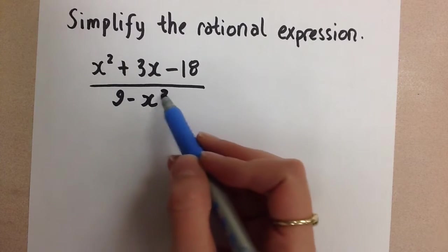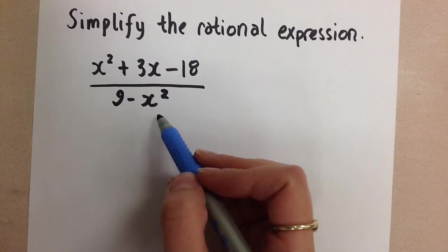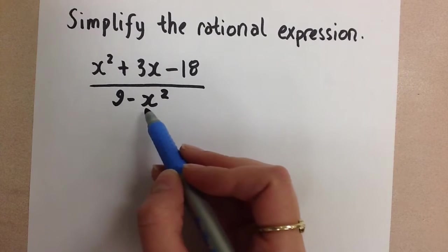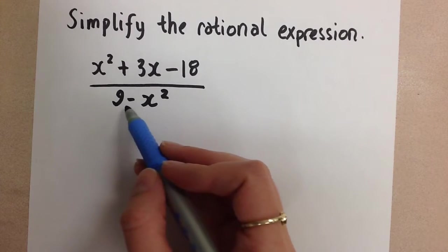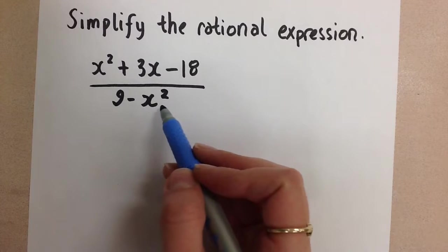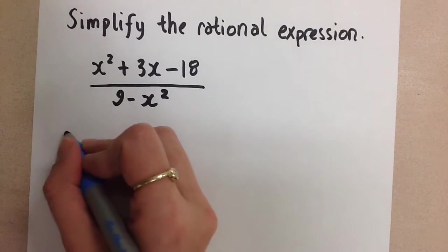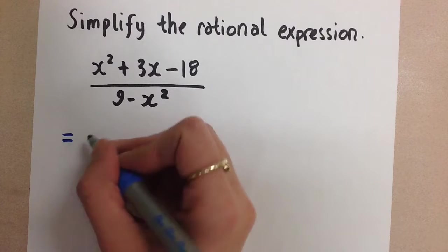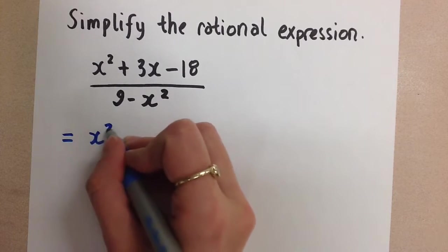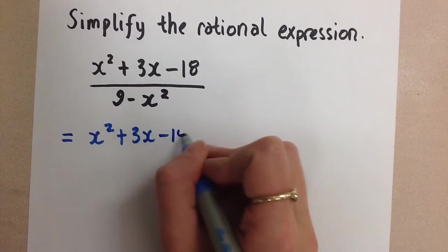And then the denominator, it is a difference of squares, but I think sometimes when it's in this order, not in decreasing order of the degrees, it's hard for us to notice that it's a difference of squares. So I'm just going to rewrite this expression so that the denominator looks like what you are used to seeing it as.